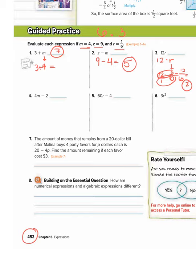Number 4, 4m minus 2. Remember, that means 4 times m minus 2. You have to follow order of operations still. So we got to do multiplication first. So 4 times m is 4, minus 2. So 4 times 4 is 16. 16 minus 2, that's 14.